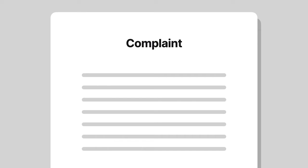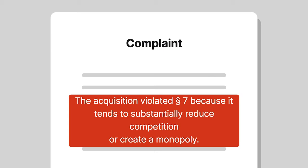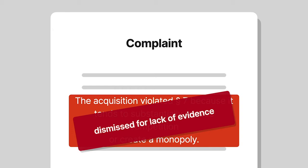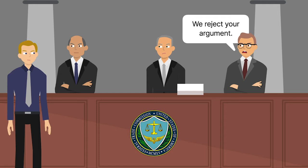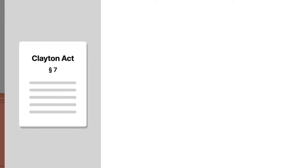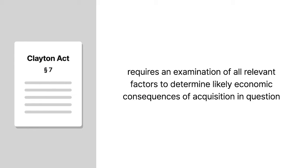The complaint against Pillsbury alleged that the acquisition violated Section 7 because it tended to substantially reduce competition or create a monopoly. On an interlocutory appeal from a dismissal for lack of evidence, the FTC rejected the government's argument that any acquisition that substantially increases a company's market share is illegal per se. Instead, Section 7 required an examination of all relevant factors to determine the likely economic consequences of the acquisition in question.